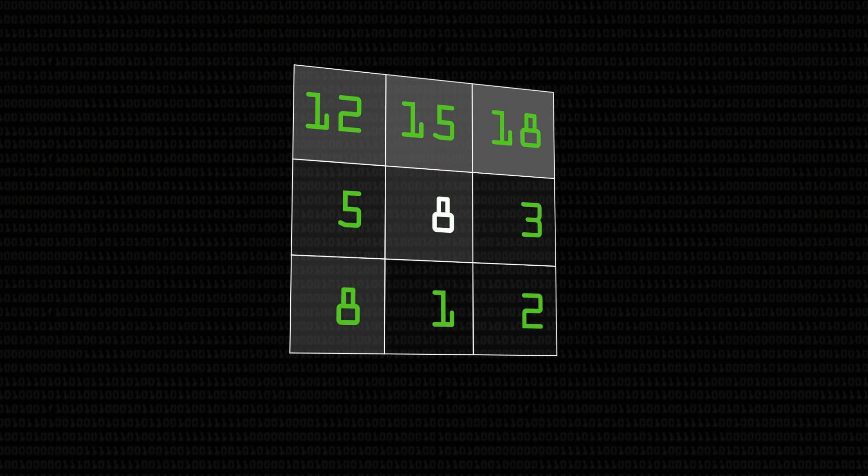Local binary pattern looks at nine pixels at a time. So it looks at a little block of three by three pixels and it's particularly interested at the central pixel. So let's say that the pixel value of our central pixel is eight and it has eight pixels around it in this nine block.